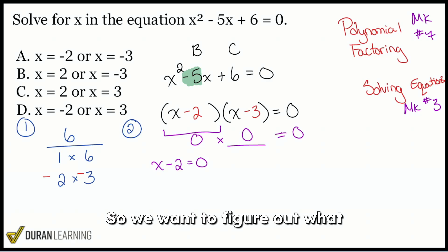So we want to figure out what makes this zero so that when we multiply, we get zero. Same thing over here. What can this x be so that when we multiply, we get zero. That's what it's all about.